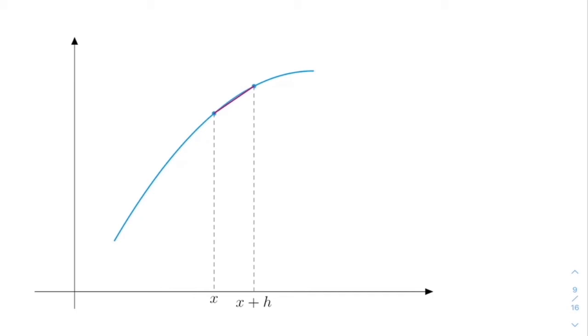So we can compute the average rate of change to be again equal to f of x plus h minus f of x divided by h. Remember that the difference between these two points is exactly h. And notice that this is getting, if I take h closer and closer to zero then these two points are getting closer and closer and that is the idea behind trying to compute the instantaneous rate of change.